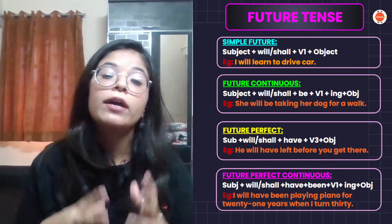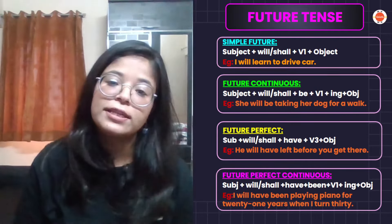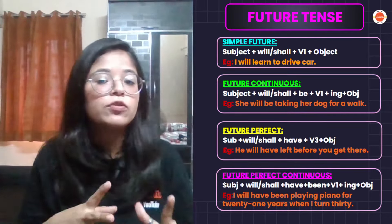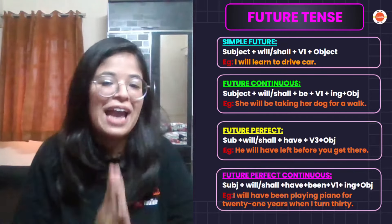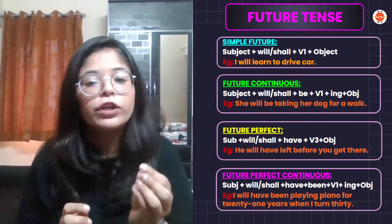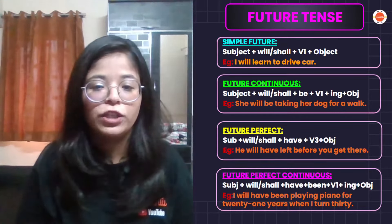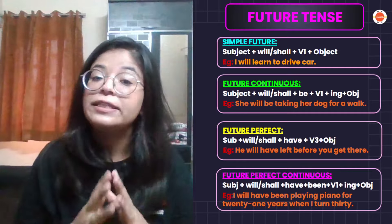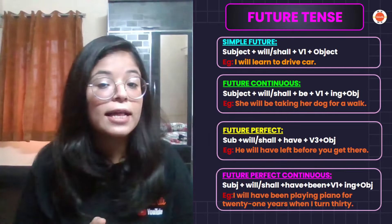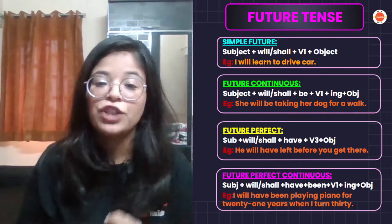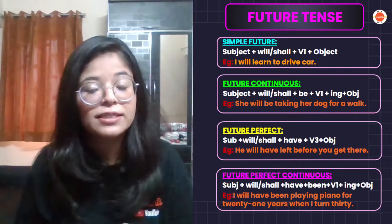If we use the future continuous tense, then you use it when you say that this action will be in the future for some time. For example, she will be taking her dog for a walk. In this way, you use will or shall with be.